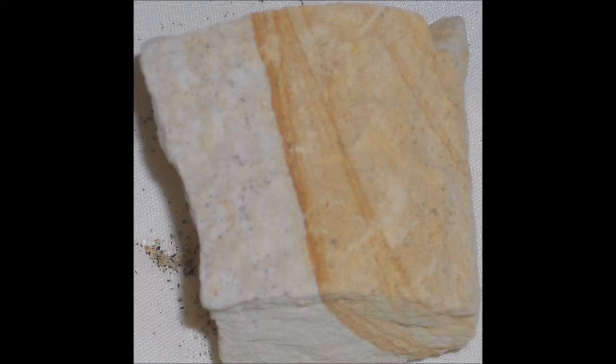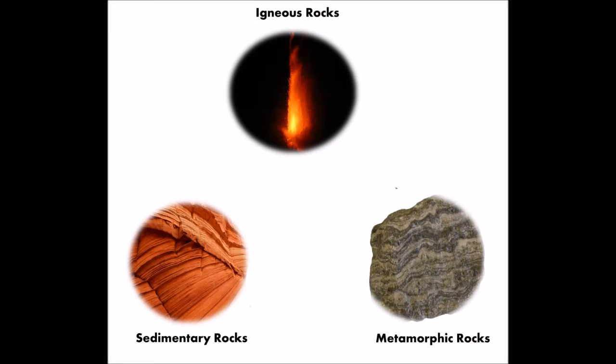Modern geologists base their current division of three rock types according to how they think the rocks were formed. This is a little misleading because geologists have never observed any of the rocks forming except the volcanic rocks. Dividing the rocks on the basis of what they look like and their content seems to be a more satisfactory system if we are to believe in the young earth view recorded in the book of Genesis.